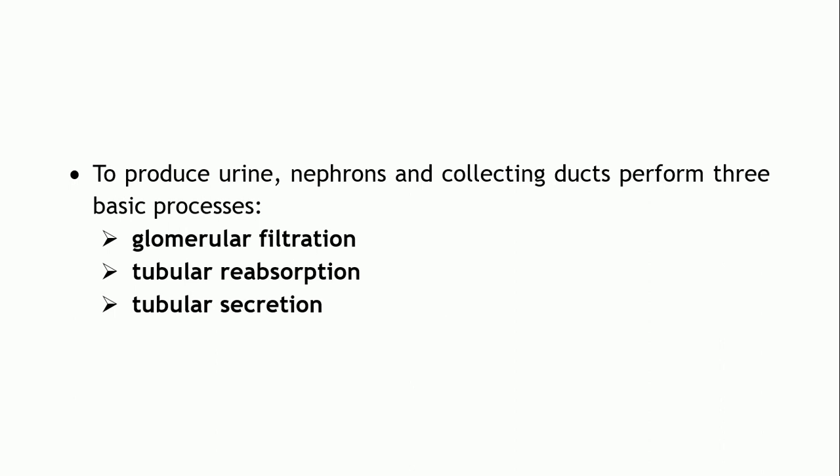In the last lecture we saw how glomerular filtration takes place — what causes blood plasma to be filtered out, the composition of the filtration membrane, how pressure differences allow blood to be filtered along with dissolved substances and water, the glomerular filtration rate, the factors affecting GFR, and how GFR is regulated, since this is the main step in urine formation.